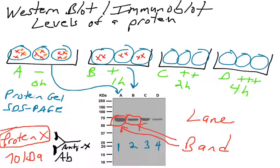Another term used to read a Western blot is lanes. We number these lanes 1, 2, 3, and 4. Lane 1 analyzes sample A, lane 2 analyzes sample B, lanes 3 and 4 analyze samples C and D, respectively. Throughout the course when we discuss data from papers, you'll be asked to compare, for example, lane 1 versus lane 4 — did the protein level change based on how cells were treated in each lane?